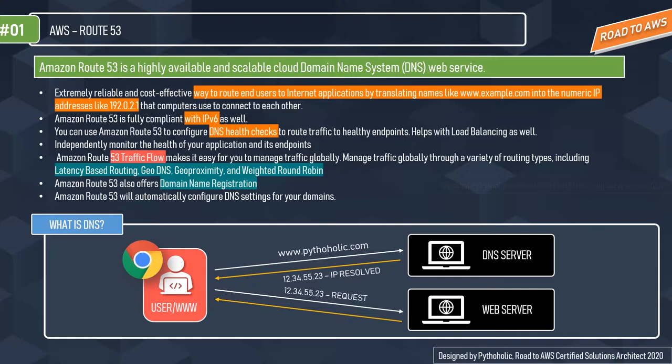With Route 53, you can independently monitor the health of your application and its endpoints. Amazon Route 53 Traffic Flow makes it easy to manage traffic globally through a variety of routing types, including latency-based routing, GeoDNS, geoproximity, and weighted round robin. Route 53 also offers domain name registration — similar to GoDaddy or Hostinger — and will automatically configure DNS settings for your domains.